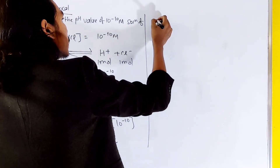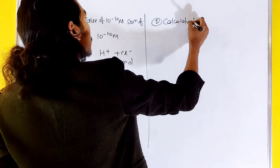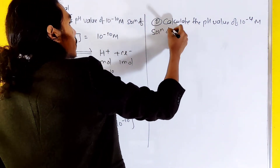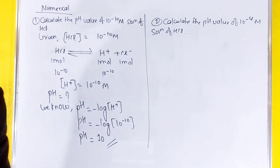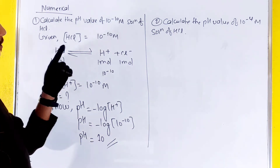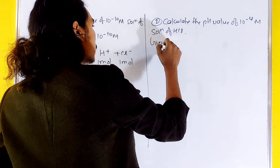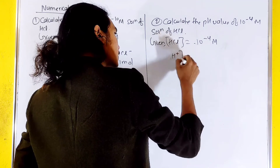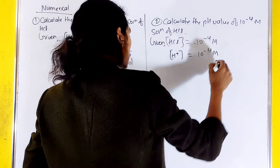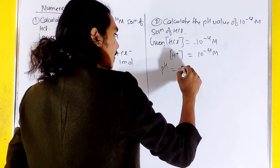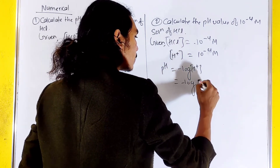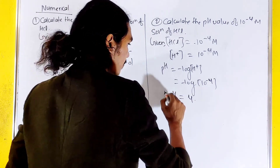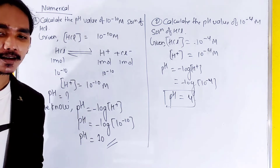Question number 2: calculate the pH value of 10 to the power minus 4 molar solution of HCl. Given that HCl concentration is 10 to the power minus 4 M, the H⁺ concentration is 10 to the power minus 4 M. So pH equals negative log of 10 to the power minus 4, which gives pH equals 4.